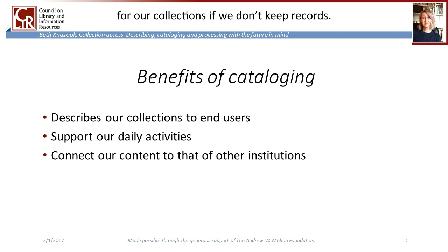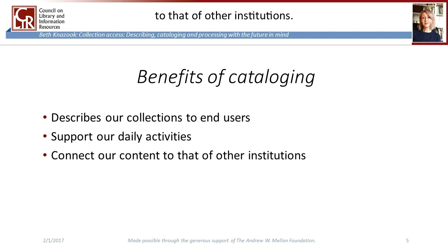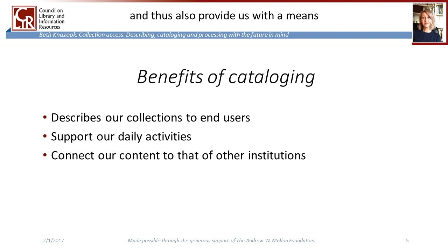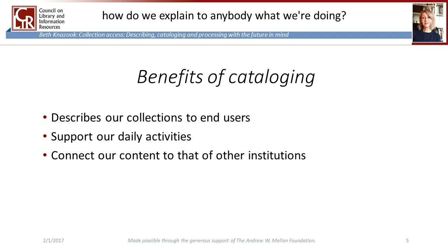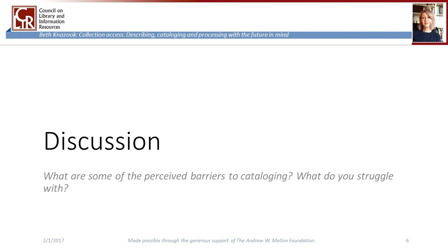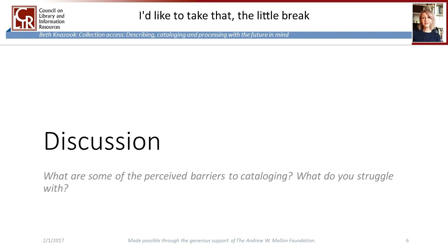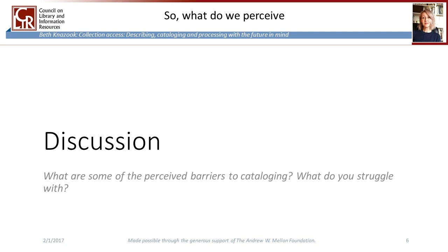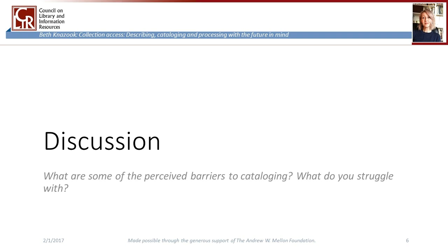And lastly, cataloging connects our content to that of other institutions. It makes us relevant, establishes where our usefulness and our authority lies, and thus provides us with a means of reaching and impressing donors. If we don't have information about our collections, how do we explain to anybody what we're doing? Now I'd like to take a break to talk about why we don't always reap these benefits. What do we perceive to be some of the barriers to cataloging? What are some concerns you have when cataloging, and why is it something that doesn't always get done — it gets put on the back burner?